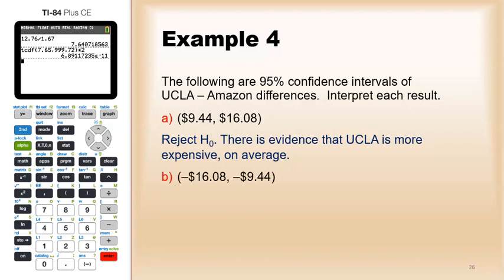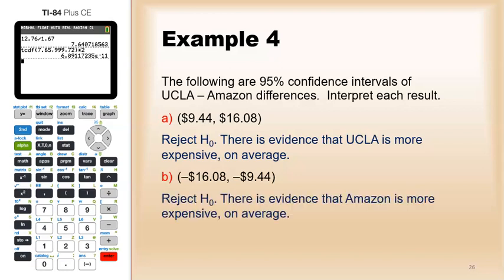If the numbers were both negative, on the other hand, like negative 16.08 to negative 944, well, since this was UCLA minus Amazon, negative numbers would mean Amazon was more expensive. So, if this happened to be our interval, then we would have rejected. That would have been evidence that Amazon is more expensive.